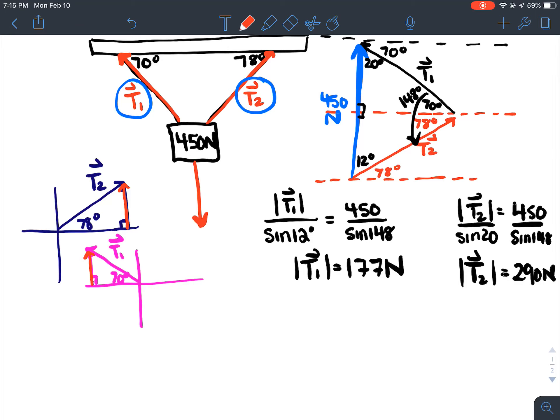are going to add up to 450. Because both of those vertical components, you want that to equal your downward force of 450. So you would have to set that up like, you know this side here is going to be equal to the magnitude of T2 times sine 78. You know that's that side.